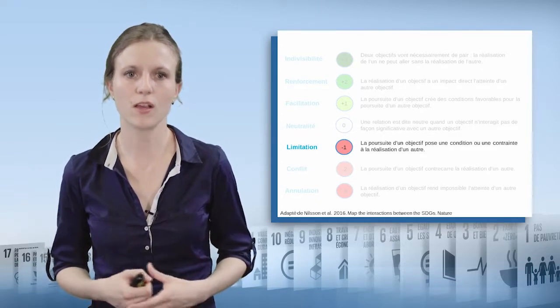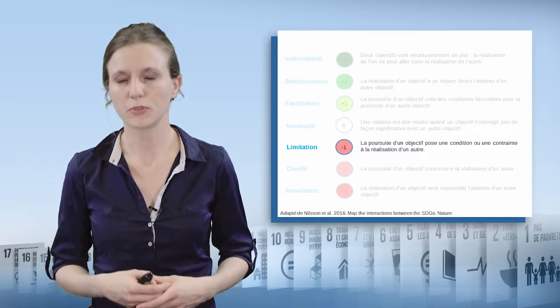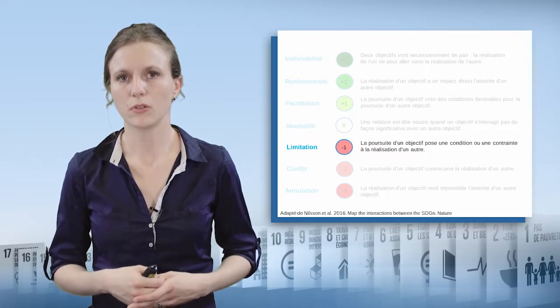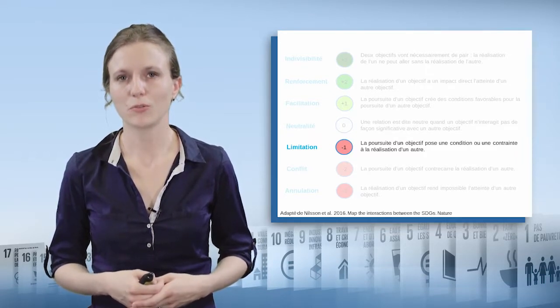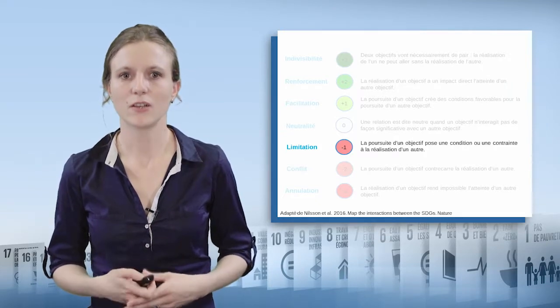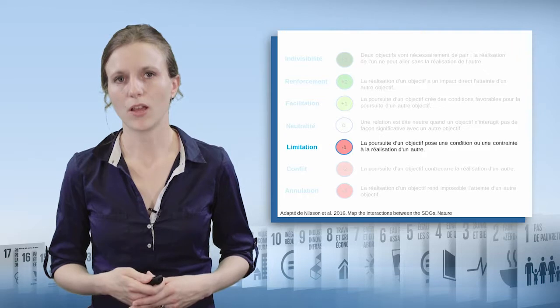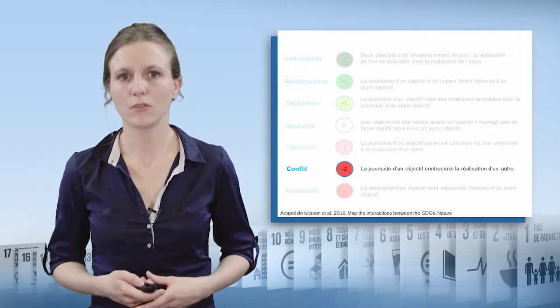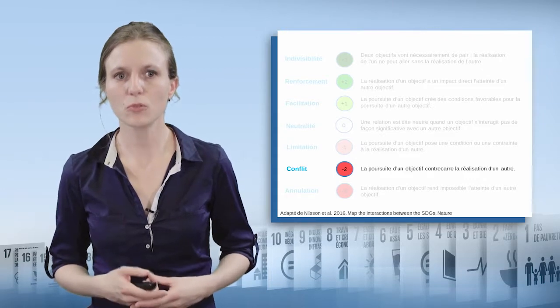Likewise, fulfilling two goals may cause tensions or even contradictory effects. Sometimes pursuing one objective may generate limitations or conditions to the fulfilment of another. For example, actions taken to protect natural resources may impose a limitation on economic resources which are directly dependent on the use of said resources. It could be, for instance, fishing quotas.